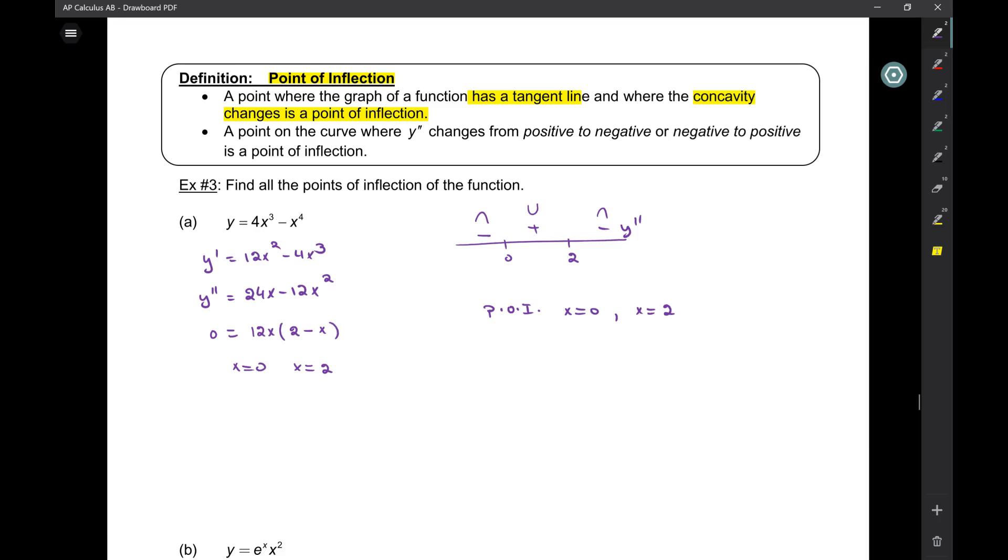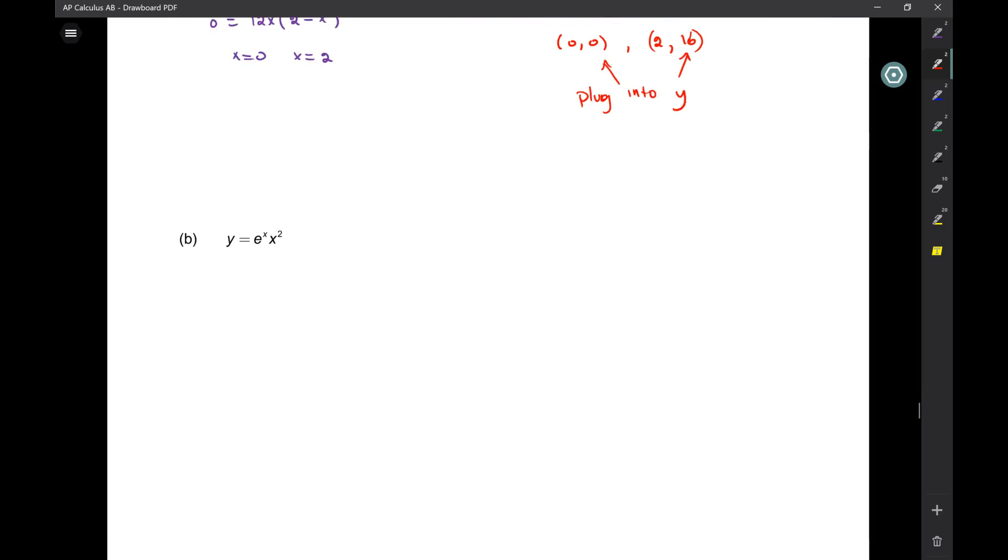Can I figure out the y values? How? Plug it into the original. So, it's at 0, 0, and 2, comma, 16. Okay, so we get those by plugging it into y. You need the y values. All right, let's do this one.